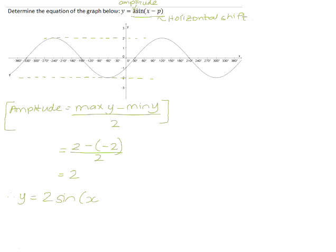Now we need to figure out how the graph has been shifted. And sometimes the best way to do that is to think about where the standard sine graph would be. So if we were going to just draw the graph of 2 sine x, it would have its first point at the origin, 0, 0.